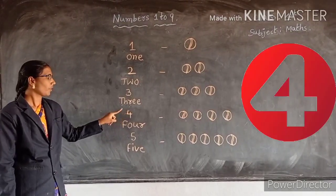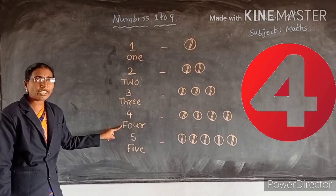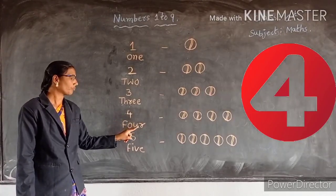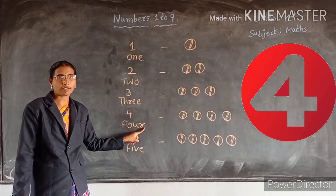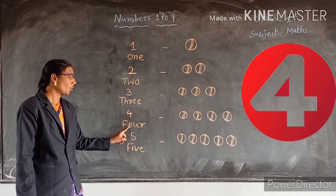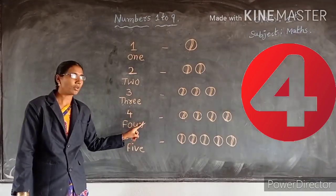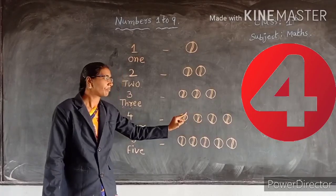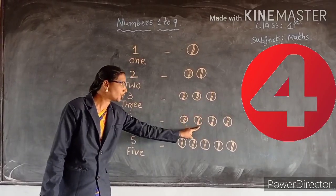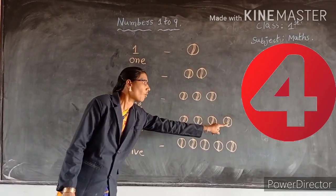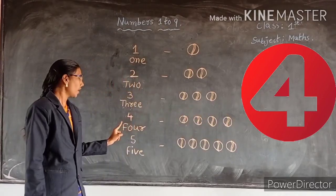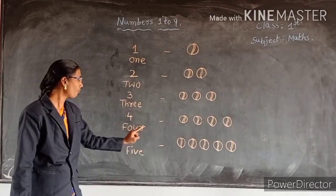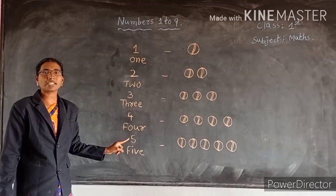4. What is this spelling? F, O, U, R. 4. How many parts are there? Count. 1, 2, 3, 4.